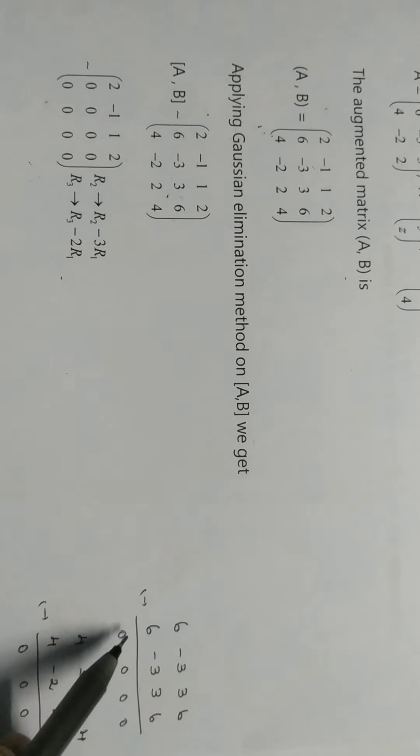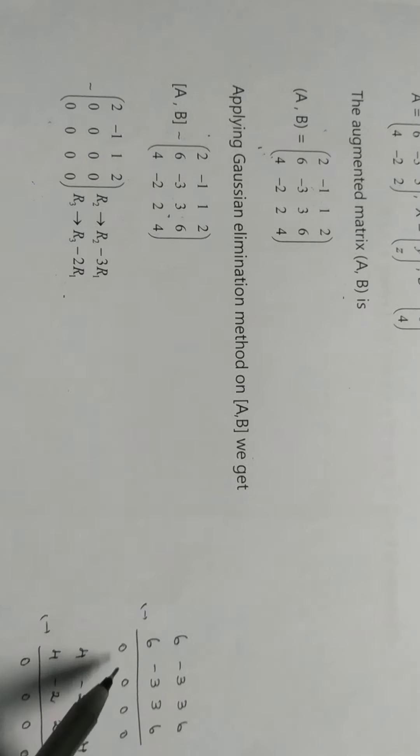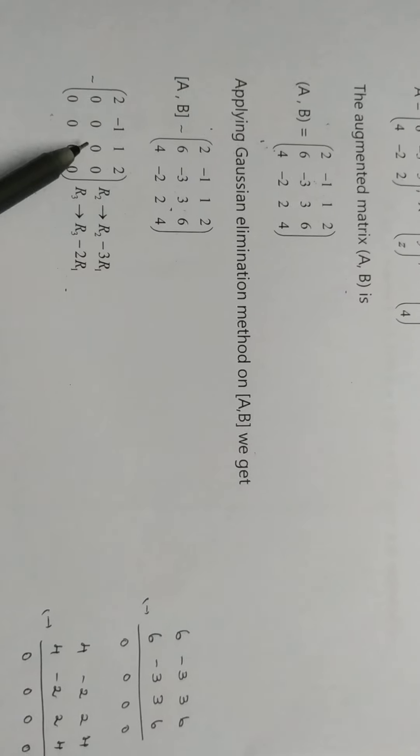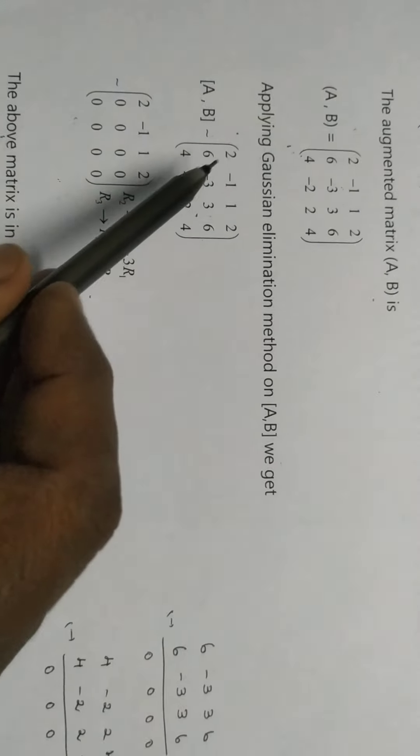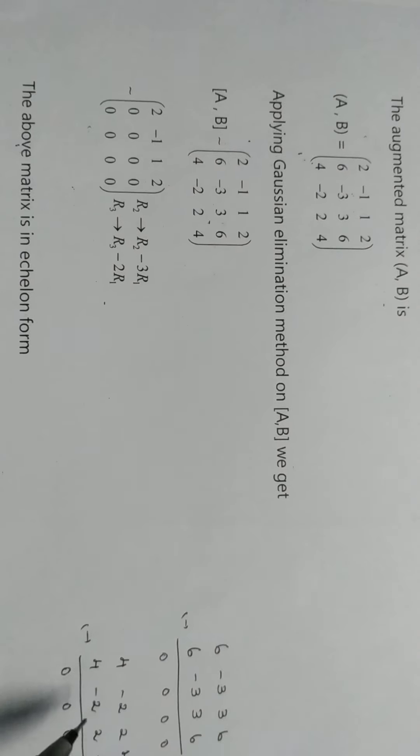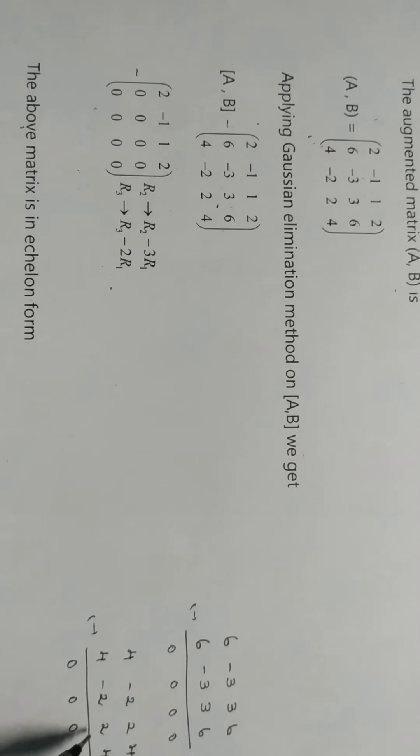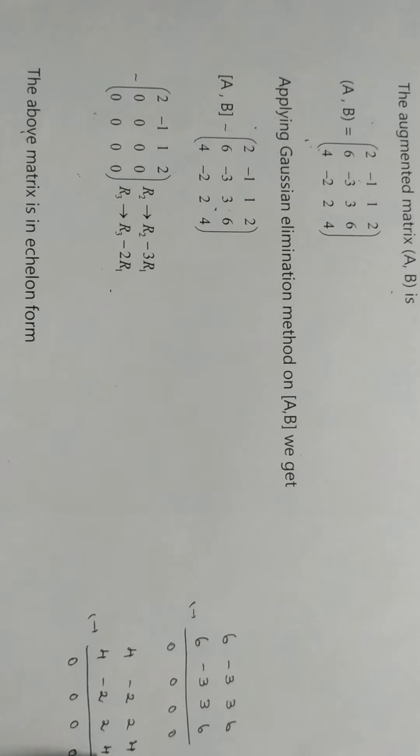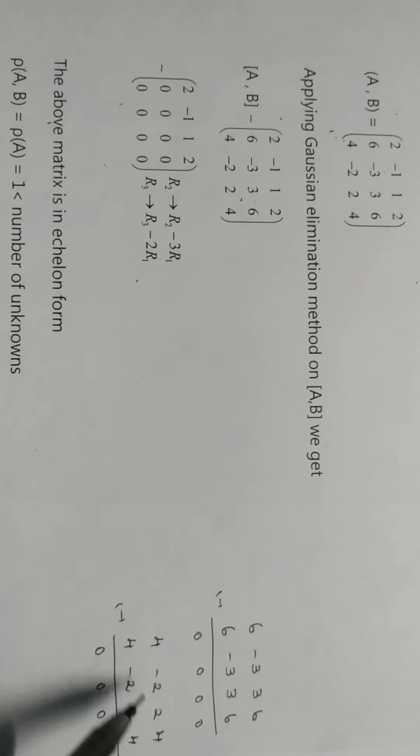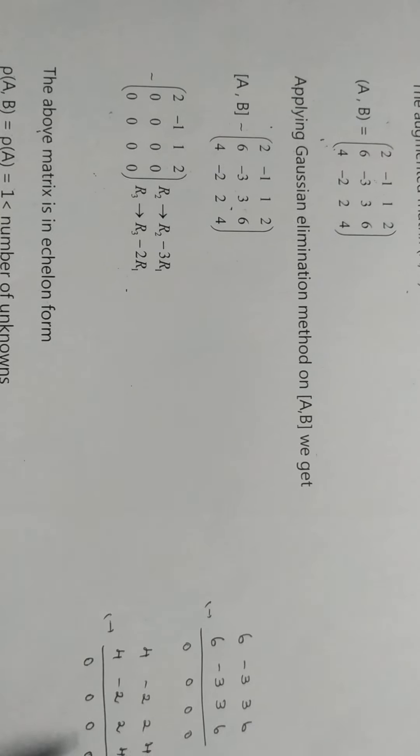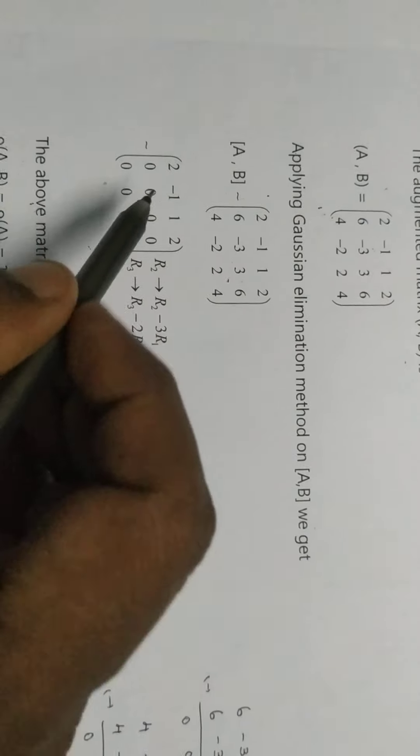For R3: 4 minus 2 times 2 is 0. Minus 2 minus 2 times minus 1 is 0. 2 minus 2 times 1 is 0. 4 minus 2 times 2 is 0. So this is 0 in second row and 0 in third row. This is the Echelon form.